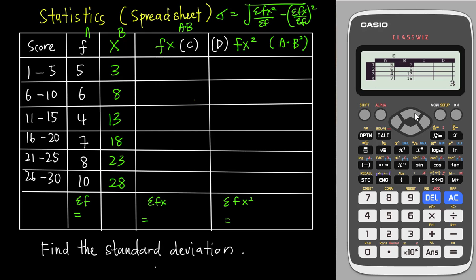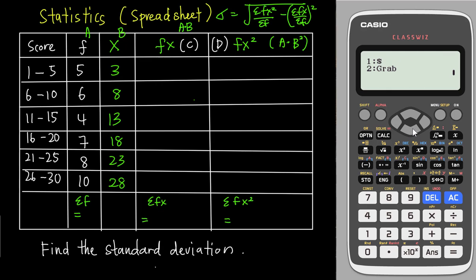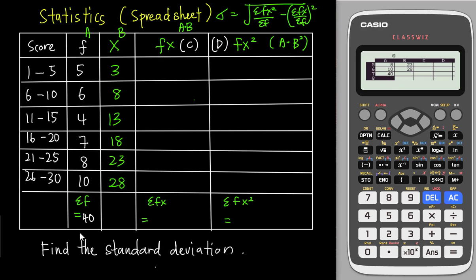To find sum of f, I don't want to add manually — I'll ask the calculator to do it. I go to the option, come down three times, and look for Sum, which is number 4. I tell the calculator to sum from A1 all the way to A6: I type Alpha A1, then use the range sign (Alpha + the ∫dx button), then A6. The calculator gives me the sum of f = 40.